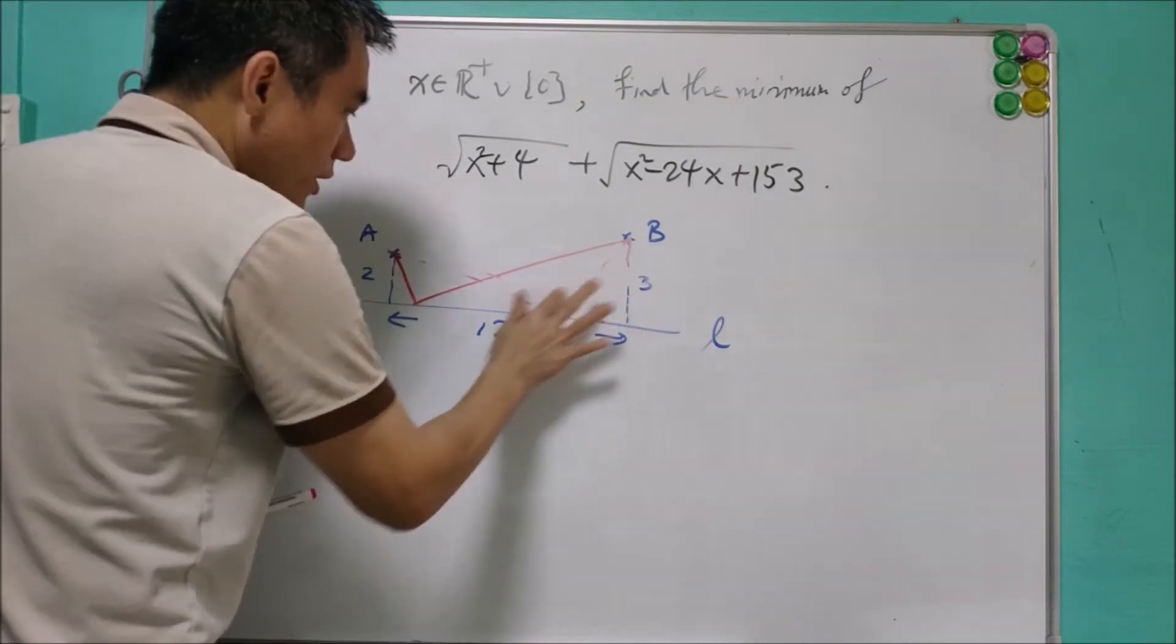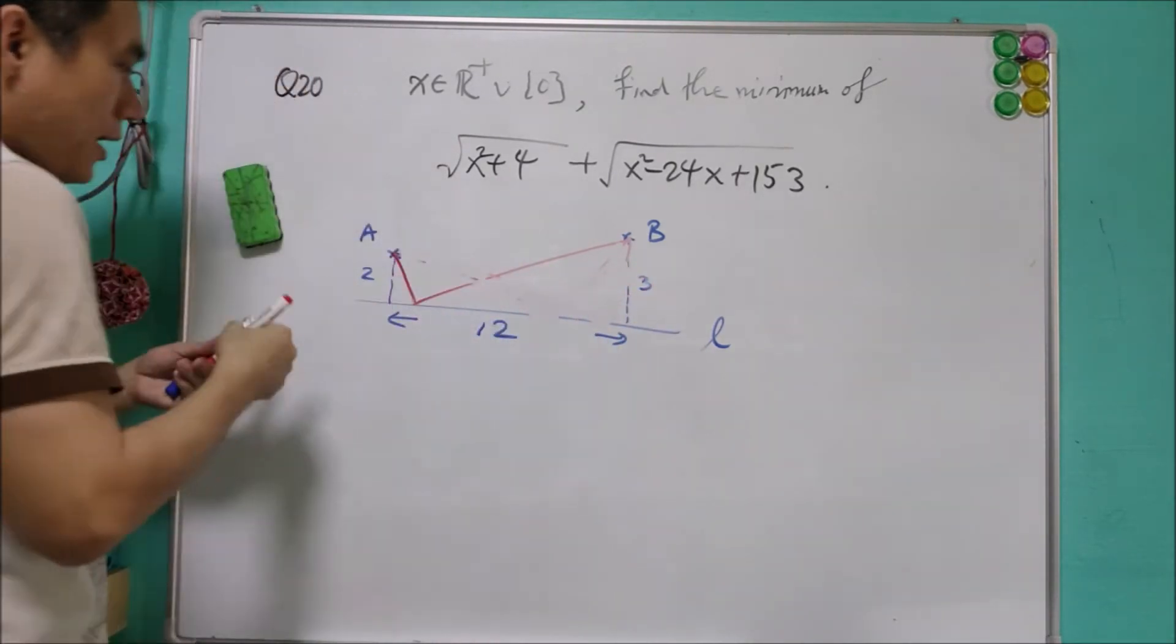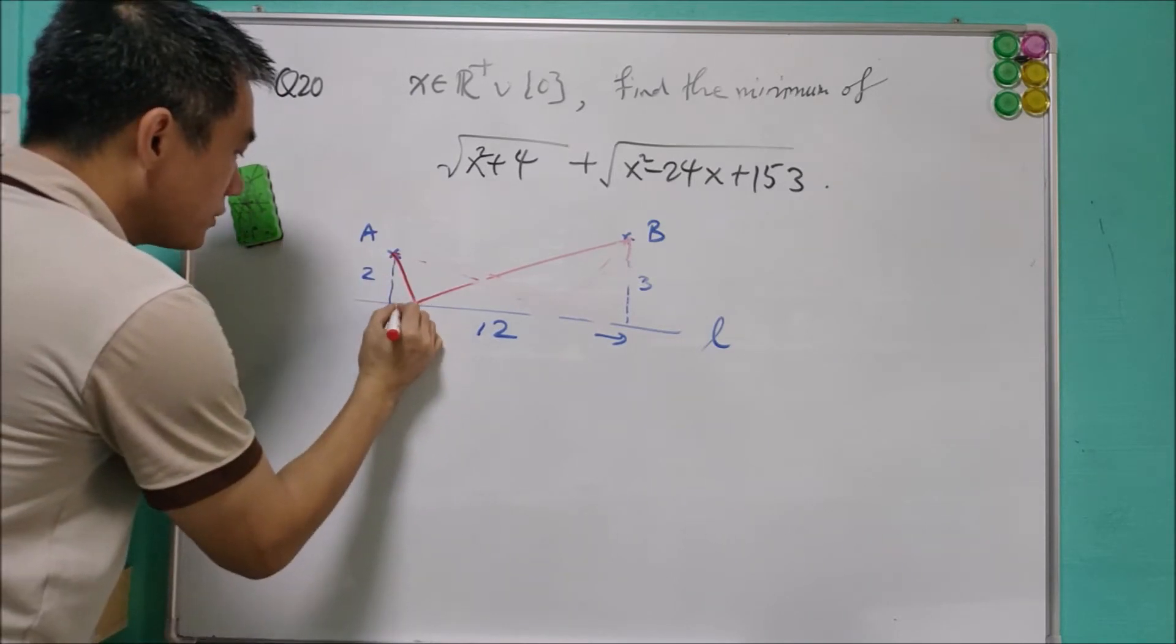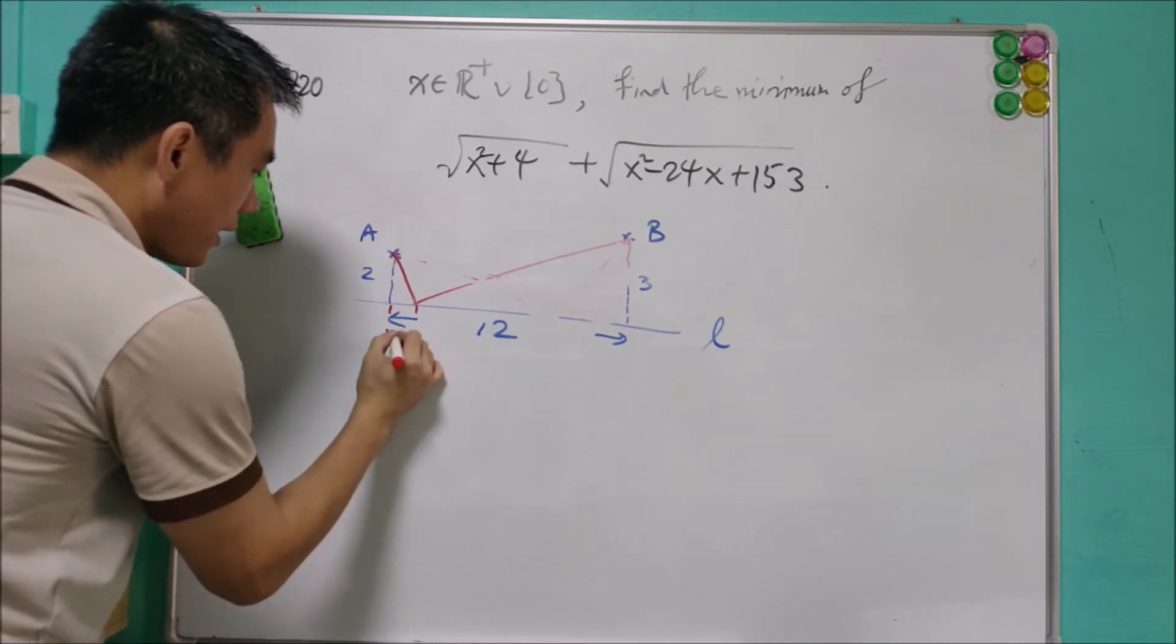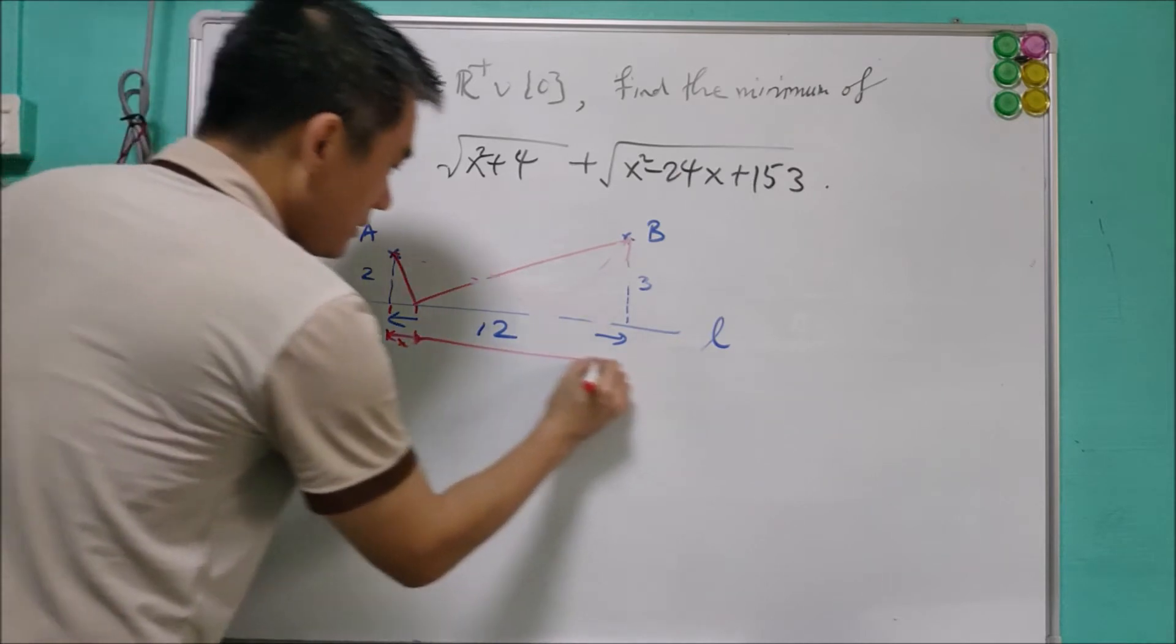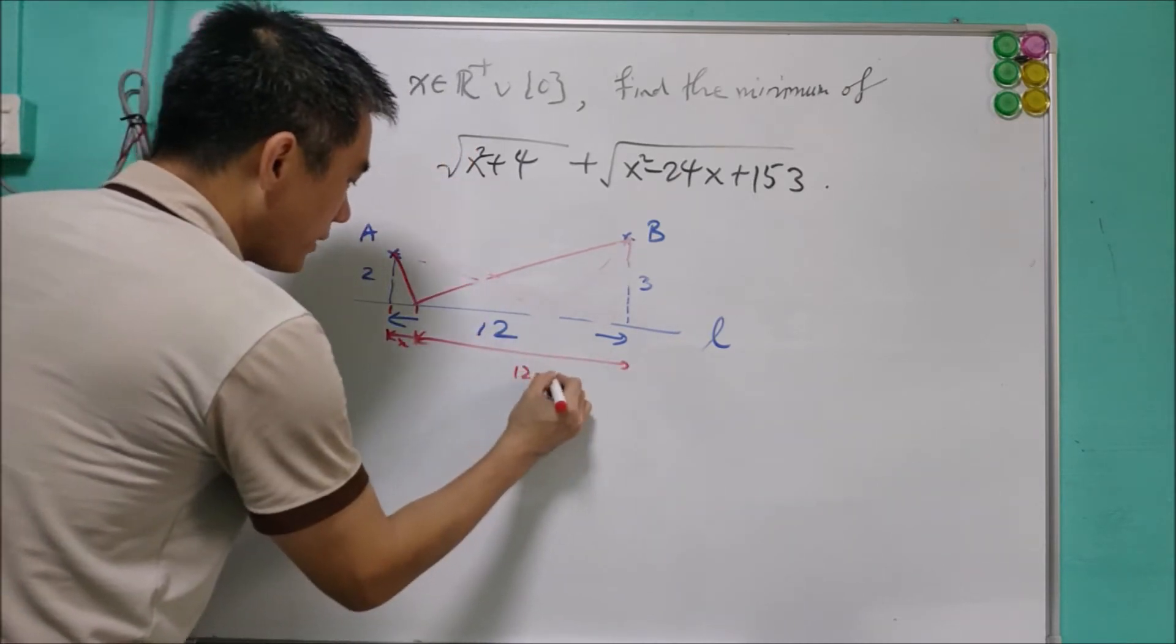So let's say we arbitrarily choose one path and call this is equal to x. Call this line at x. And this therefore will equal to 12 minus x.